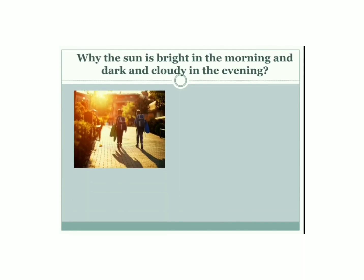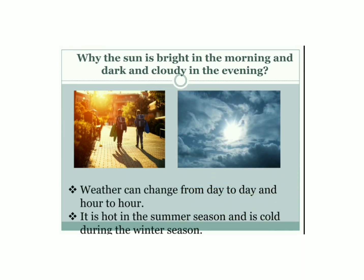Do you know why the sun is bright in the morning and dark and cloudy in the evening? It may be due to atmospheric conditions. Temperature, the amount of water vapor in the air, and rainfall of a place on a particular day describe the weather of that day. Weather can change from day to day and hour to hour. It is hot in the summer season and cold during the winter season. Do you know how the sun is related to weather? Let me explain.